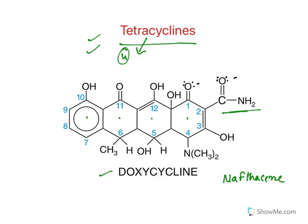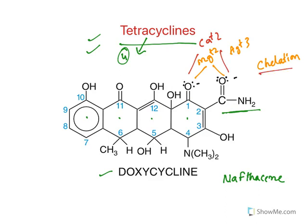An important feature is that tetracyclines have two adjacent oxygen atoms which generate a partial negative charge. Because of this, anything with a positive charge — like magnesium or aluminum — will form bonds with these oxygens. This is called chelation. Calcium is the best-known example; calcium will also form such bonds.